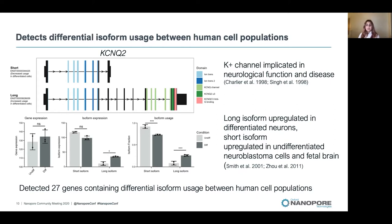Specific examples of differential isoform usage have been identified in a number of diseases including cancers and neurological disorders. We found evidence of differential isoform usage in a potassium channel gene expressed in the brain that has been implicated in neurological function and disease. I'll walk through this figure to explain what each of the plots is showing.